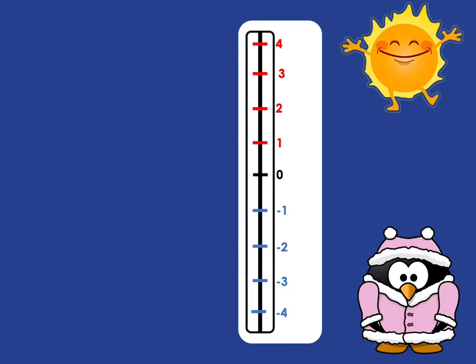Let's look at a scaled-down thermometer — we're only going to have temperatures between 4 and negative 4. Which is bigger: negative 4 or negative 3? Looking at where they are on the thermometer, negative 3 is the bigger, higher temperature. So we can write that as: negative 3 is bigger than negative 4.